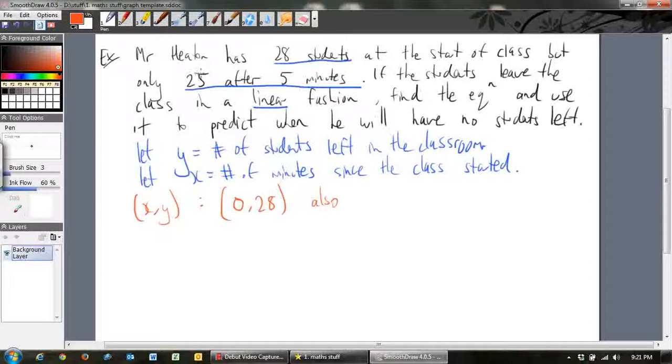Also, we've got 25 students after five minutes. So that means when x is equal to five, so after five minutes, we have 25 students left. And so we've got these two points. And if you remember from determining equations, if you know two points on a linear graph, and we've got a linear graph we know because we're told it was linear, then we can figure out the equation of the line. How do we do that? Let's go.